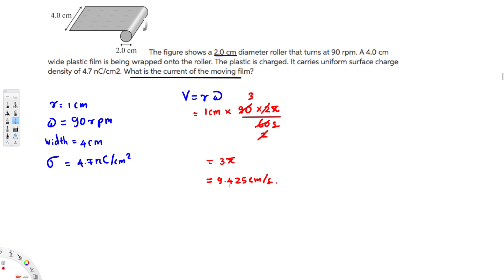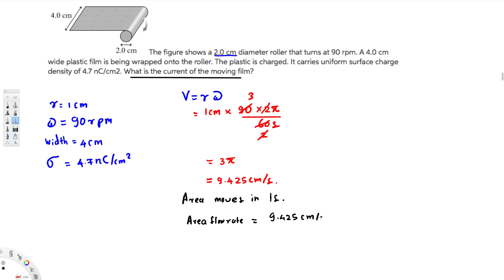Now let's see how much area moves in one second. To calculate that, we simply multiply the tangential velocity by the four centimeter width. That gives us the area flow rate: 9.425 centimeters per second times 4 centimeters equals 37.7 centimeters squared per second.